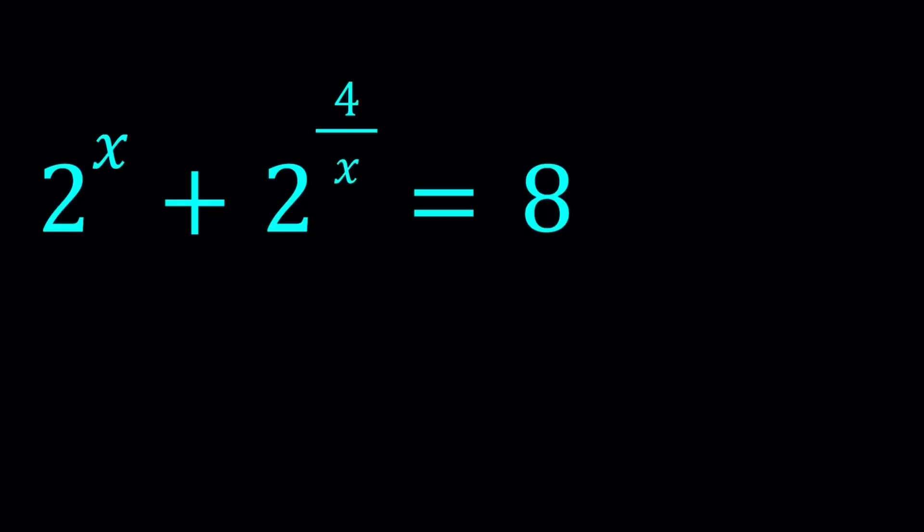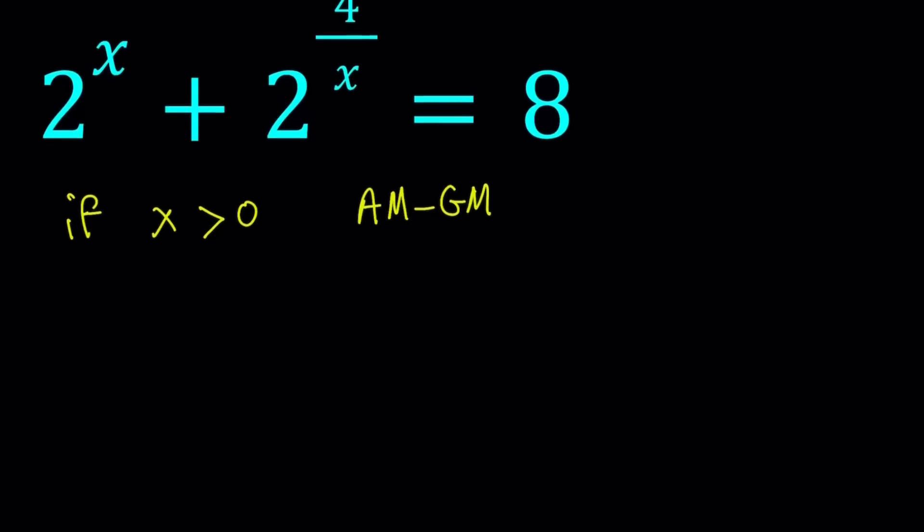Now if x is positive, first of all let's think about that. We don't know if x is positive or negative, but if x is positive, then we can use what is called AM-GM inequality. So that's what we're going to use here. We're going to do a little bit of differentiation, a little bit of calculus. I'll show you the results from Wolfram Alpha, and also we're going to be looking at the graph at the end.